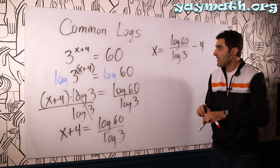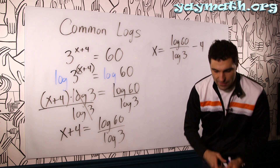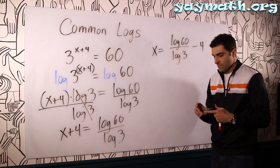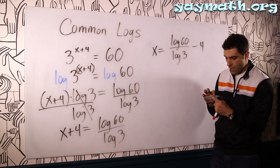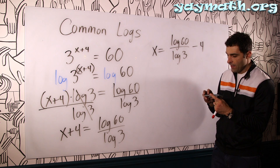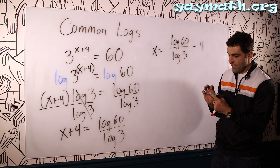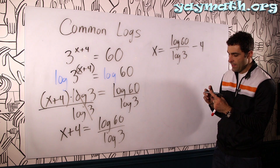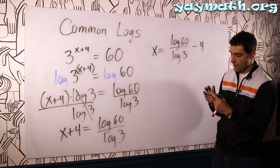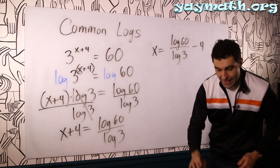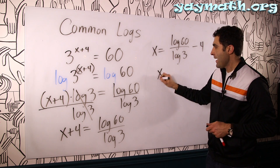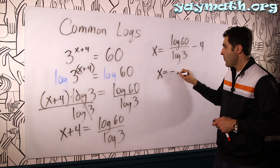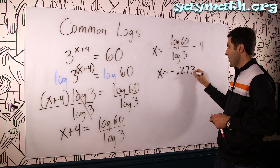Let's get to the calculator. We compute: 60 log divided by 3 log equals, then minus 4 equals negative 0.273. So x equals negative 0.273.